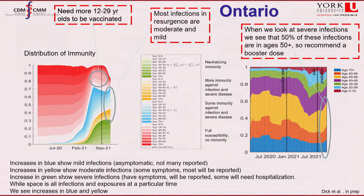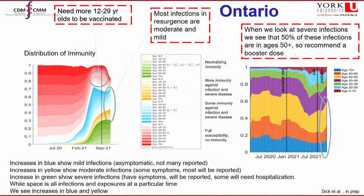A year ago we generated this graph to look at immunity distributions in the population in Ontario. In red, the lightest three shades are quite wide, meaning we needed to focus on getting higher levels of immunity in age groups 0 to 29. At the time we didn't have vaccines for the younger age groups, so we suggested a better vaccination campaign and advertising to get people ages 12 to 29 to go out and get vaccinated.